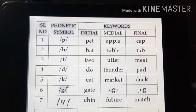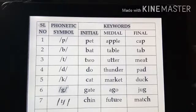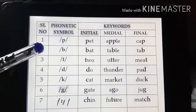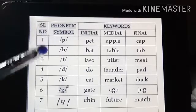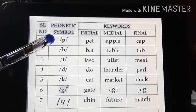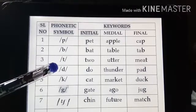Now we learn the consonant sounds of the International Phonetic Alphabet. These consonant sounds are 24 in number, as we are seeing on the screen here. Starting from the /p/ sound, we have given all these sounds here.